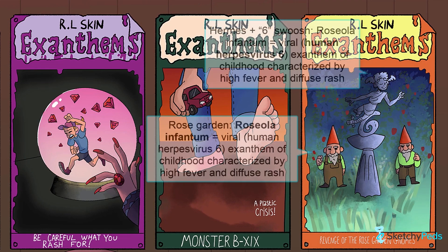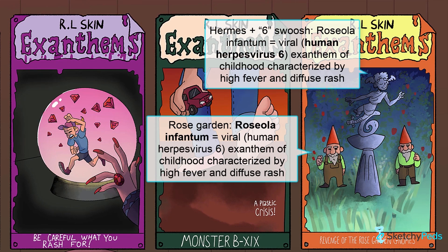The last condition we will cover in this sketch is roseola infantum, caused by human herpesvirus 6, and also known as exanthema subitum, or sixth disease. The presentation, workup, and treatment of roseola will be covered in and around the poster for the Exanthems book titled Revenge of the Rose Garden Gnomes. And don't miss the statue of Hermes for herpesvirus.